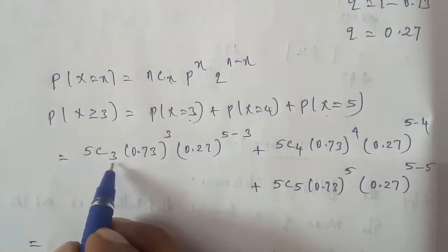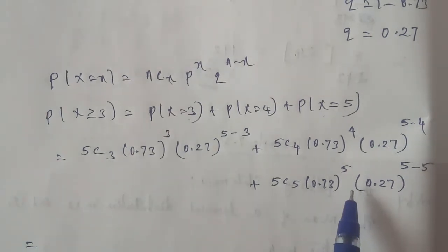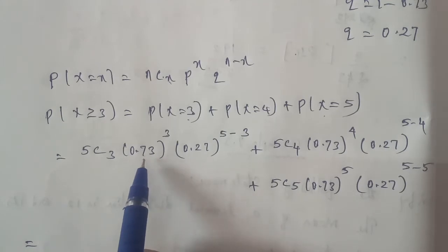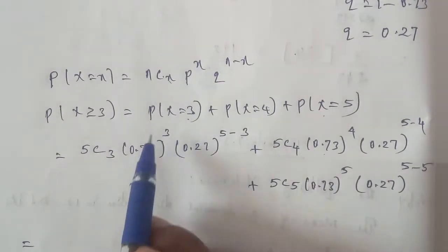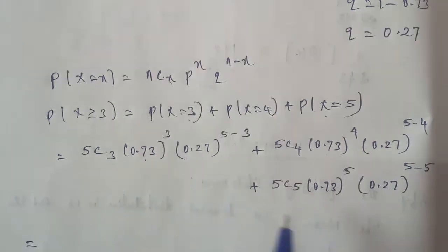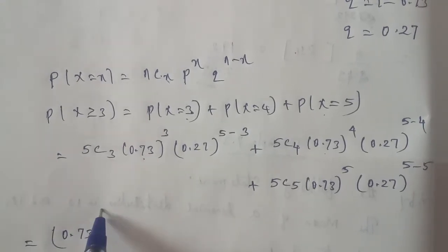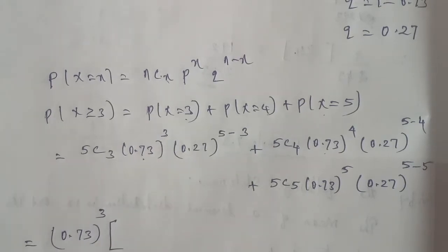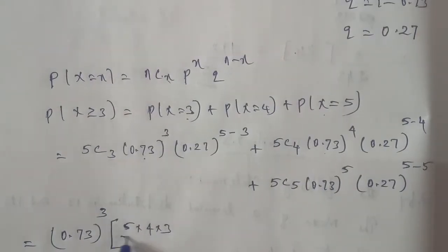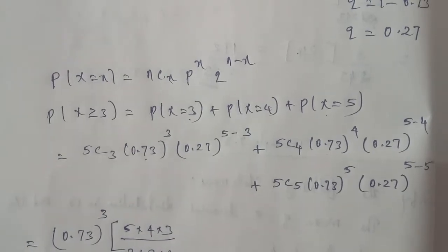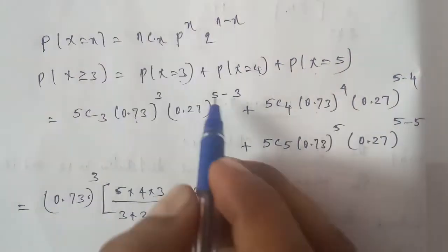Simplifying 5C3: reduce the numbers. 5C3 equals 5 × 4 × 3 divided by 3 × 2 × 1, which gives 10. The remaining factor is (0.73)³ outside, and (0.27) to the power of 5 minus 3, that is (0.27)².